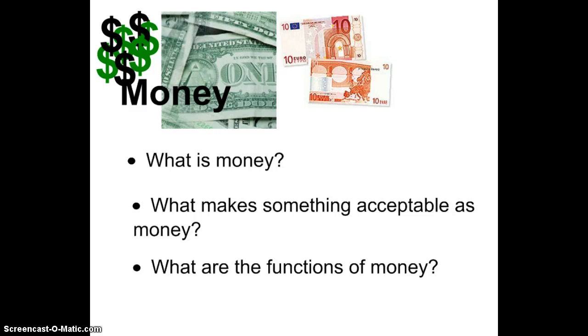In the last part of macroeconomics, we'll be talking about money, the money supply, and then the Federal Reserve and monetary policy. So to start with, we want to consider what is money, what makes something acceptable as money, and what are the functions of money.